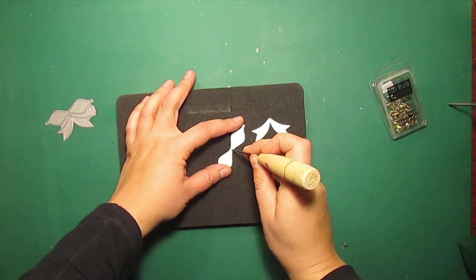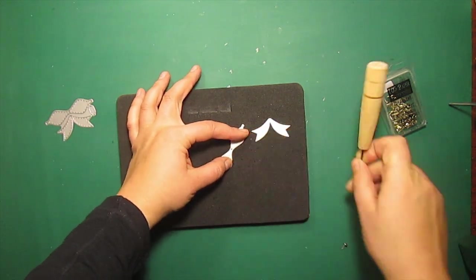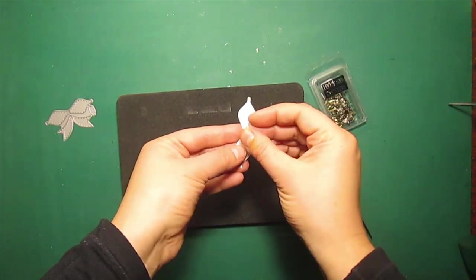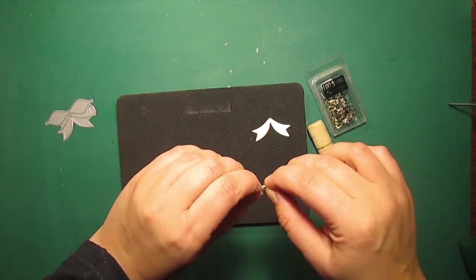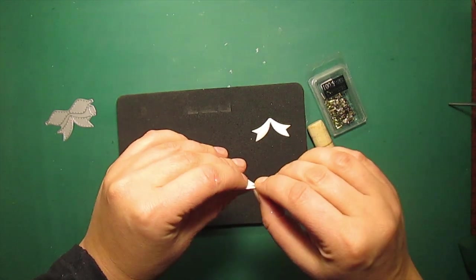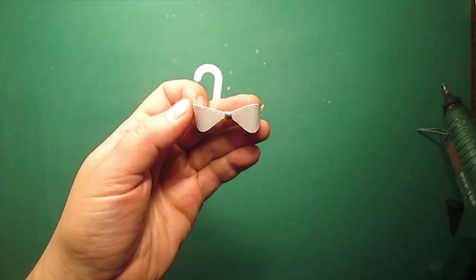I will also make a bow with this stitched bow die by Memory Box. I am attaching a small bead in the middle just to embellish it. And then I will be assembling the bow with the liquid glue.